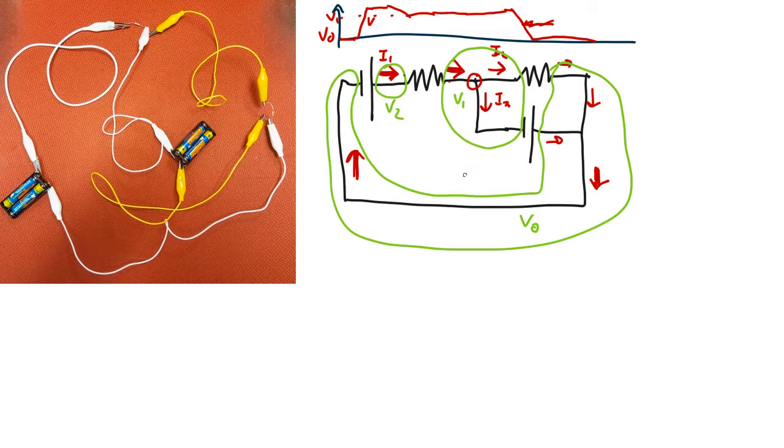And we can plot what's happening along this branch, which is it starts off at V1 and then goes up by whatever the voltage of that battery is.